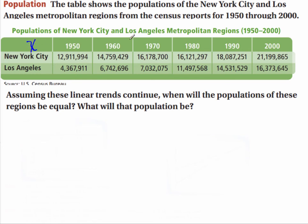Here is our independent variable, our x. If I put this in my calculator, this is going to give me a very large window to look at. So let's do a trick where we take this first year and make it year zero. So if 1950 is year zero, 1960 will be year 10, 1970 will be year 20, 1980 will be year 30, 1990 will be year 40, and 2000 will be year 50.